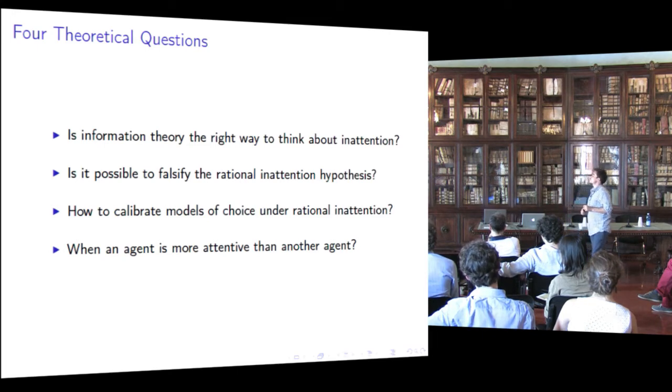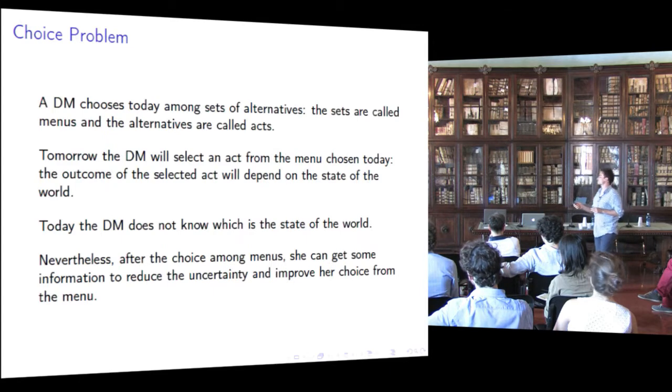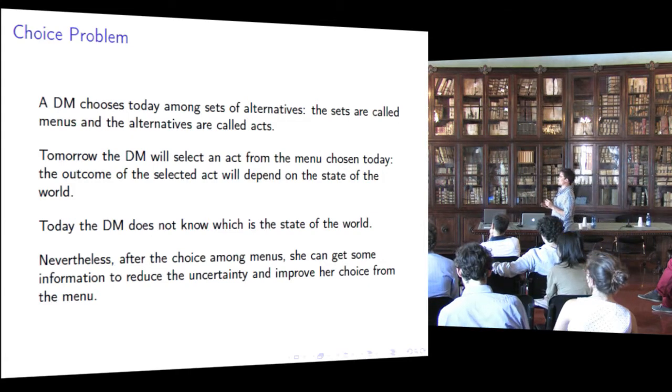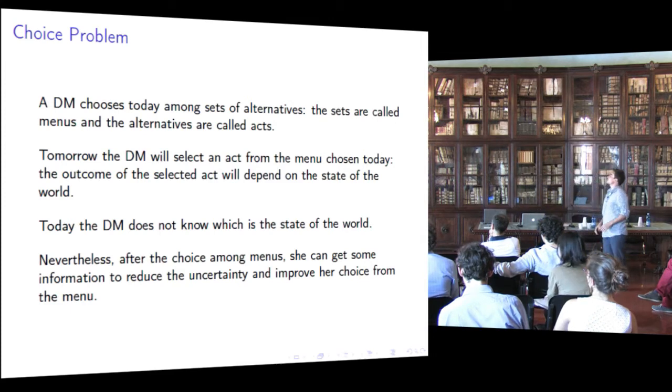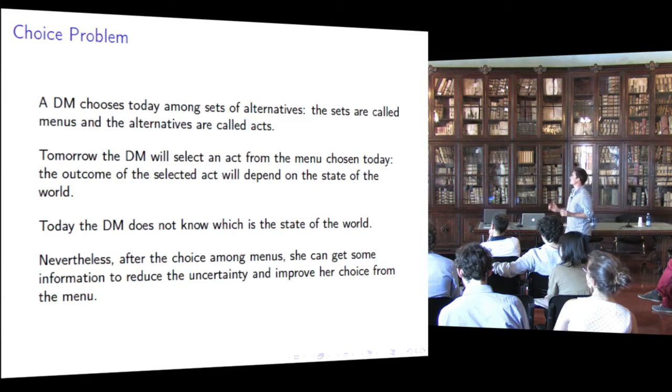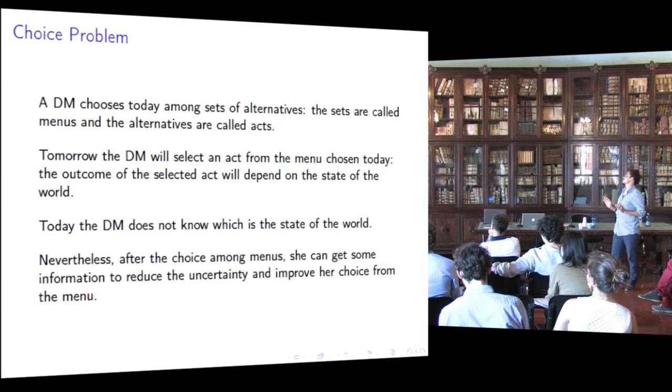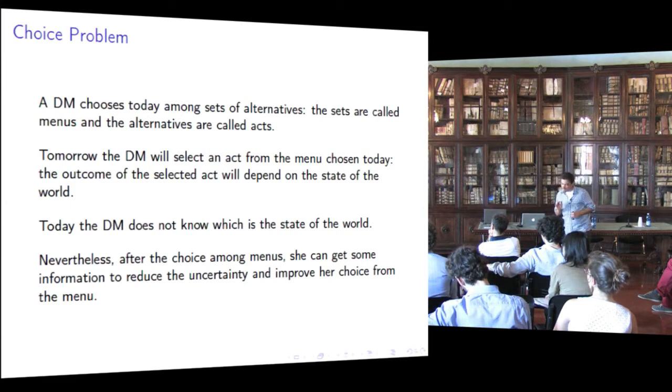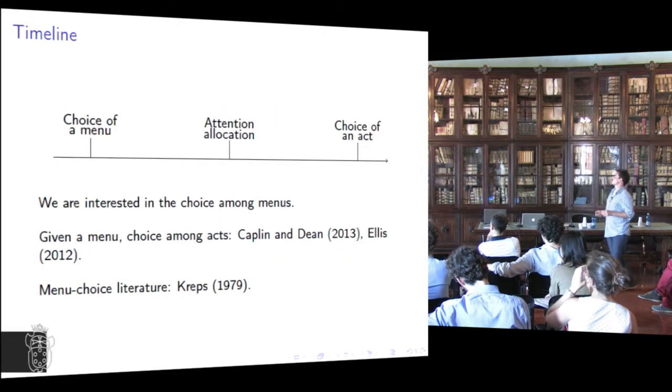In this paper, we try to answer these questions by analyzing the following choice problem. A decision maker, DM for short, chooses today among sets of alternatives. The sets are called menus and the alternatives are called acts. Tomorrow, the DM will select an act from the menu chosen today. The outcome of the selected act will depend on the state of the world. Today, the DM does not know which is the state of the world. Nevertheless, after the choice among menus, she can get some information to reduce the uncertainty and improve her choice from the menu.